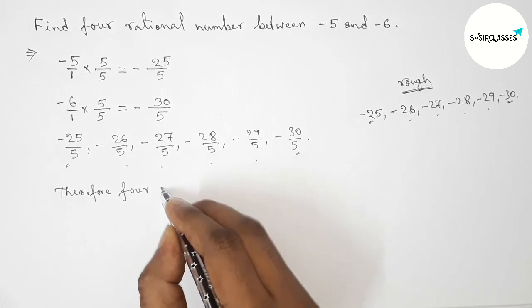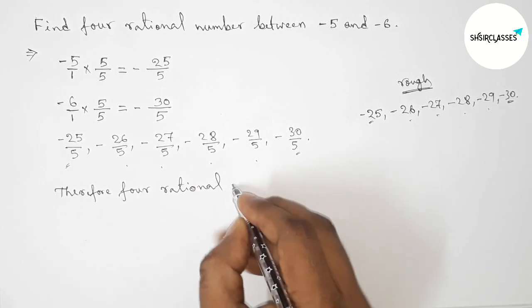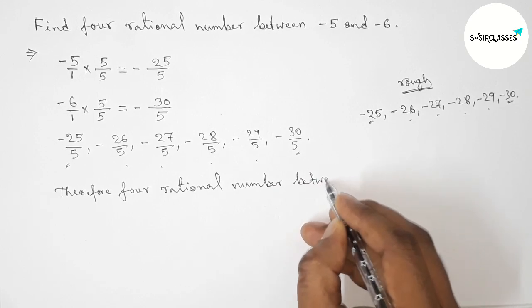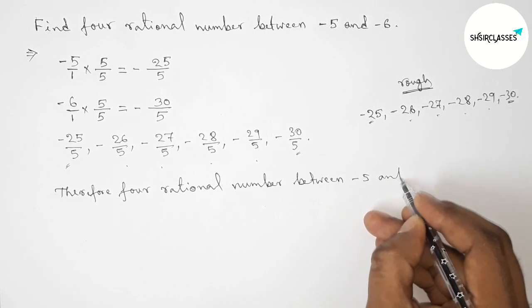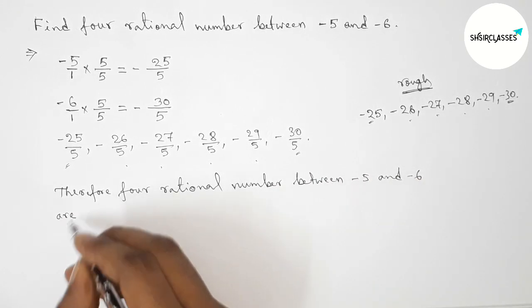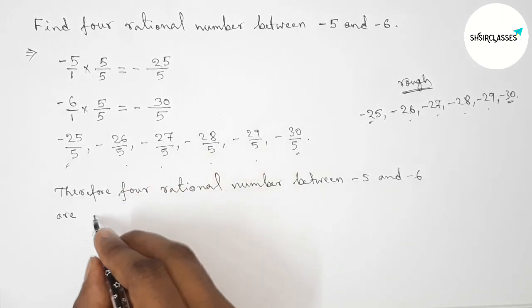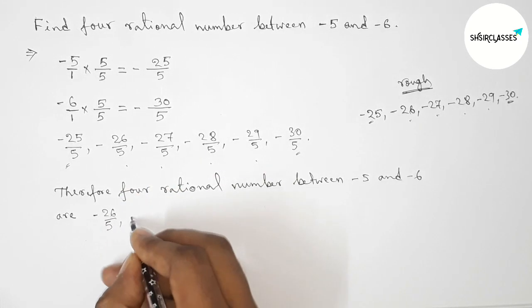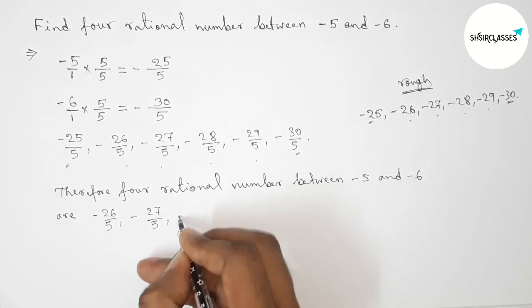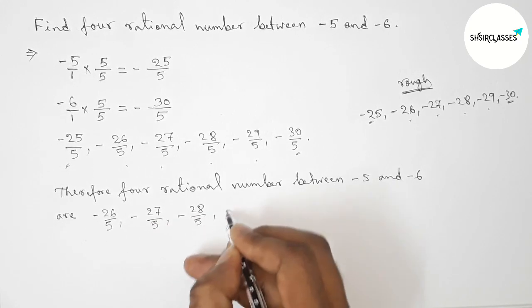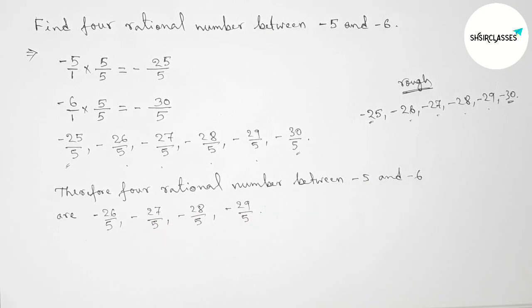Okay, so therefore the required four rational numbers between minus 5 and minus 6 are: the first one is minus 26 by 5, then minus 27 by 5, minus 28 by 5, minus 29 by 5. So that's all, thanks for watching.